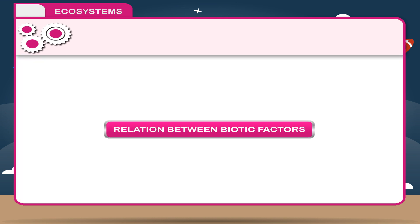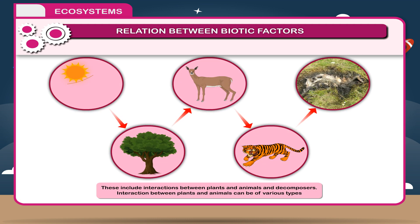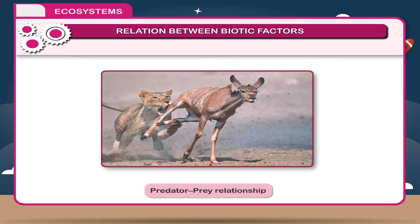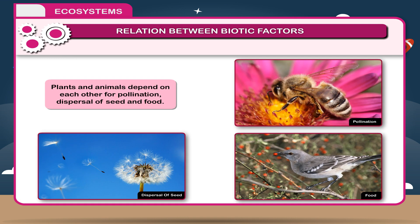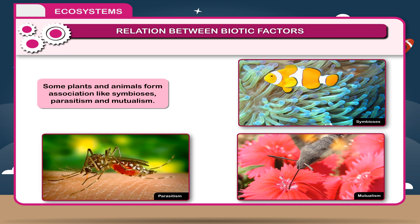Relation between biotic factors includes interactions between plants, animals, and decomposers. Interaction between plants and animals can be of various types, including predator-prey relationships. Plants and animals depend on each other for pollination, dispersal of seeds, and food. Some plants and animals form associations like symbiosis, parasitism, and mutualism.